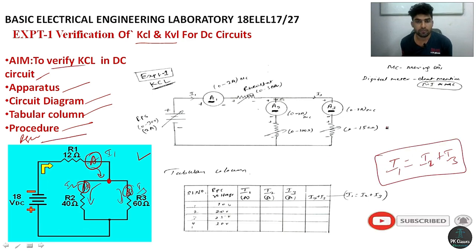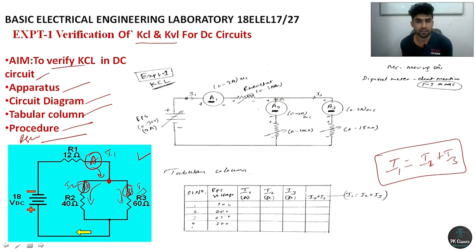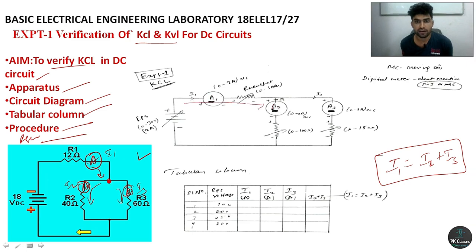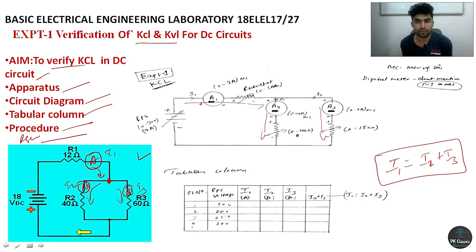Let us see the practical circuit diagram connection. RPS is required. RPS positive to ammeter, then ammeter to measure the current. Ammeter 2 measures one branch current, and ammeter 3 measures the other. Rheostats are required for controlling the current — 0 to 50, 100, and 150 ohms. You can also take fixed resistances instead of rheostats.